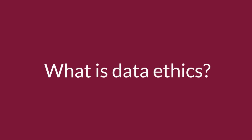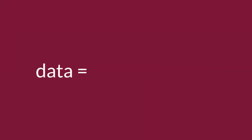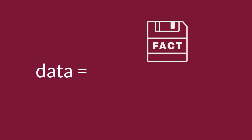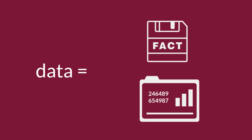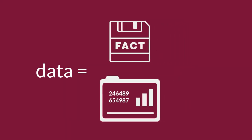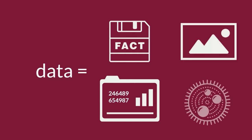What is data ethics? In the broadest sense, data is simply a piece of information. Data could be facts or statistics, which is often why we think about data as being numbers. But data can be in a variety of forms — for example, data could even be an image or a physical sample, like a cell sample.